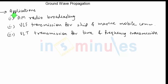Another very famous radio broadcasting is FM. FM uses the frequency range from 30 to 300 megahertz, specifically 88 to 108 megahertz, in which the propagation used is line-of-sight propagation. So line-of-sight propagation is used for FM, while ground wave propagation is used for AM radio broadcasting, which is one important application.